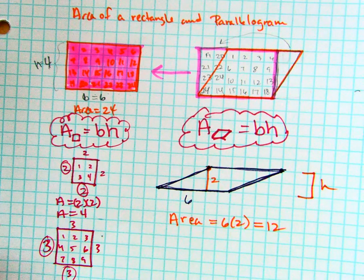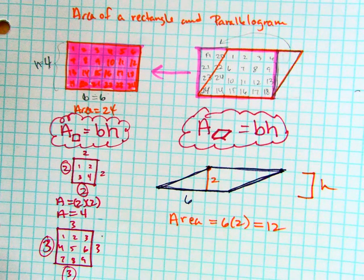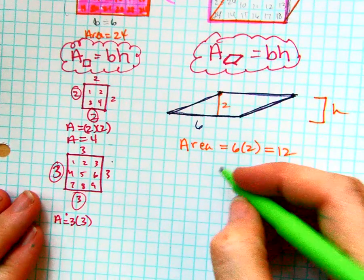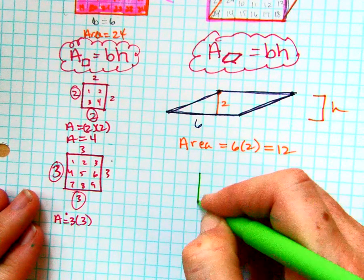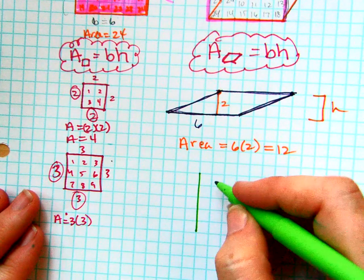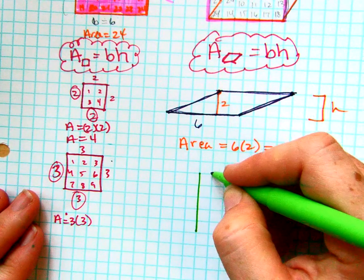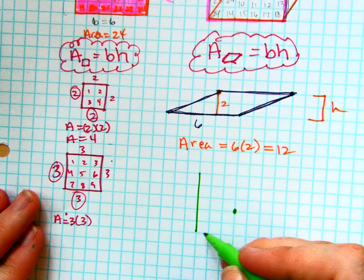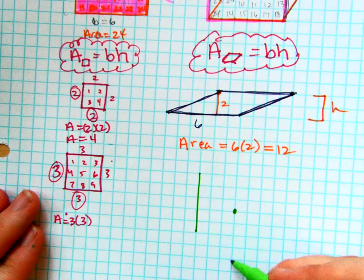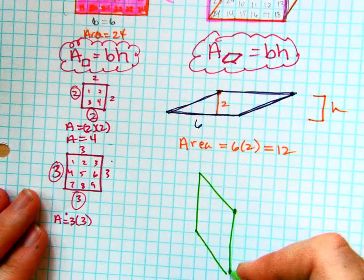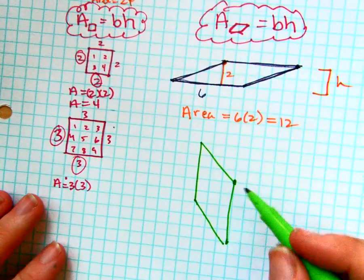And we could do one more. So parallelograms can be up and down like this. Two, three, four, five. So I'm going to maybe go get myself a picture here of a parallelogram.